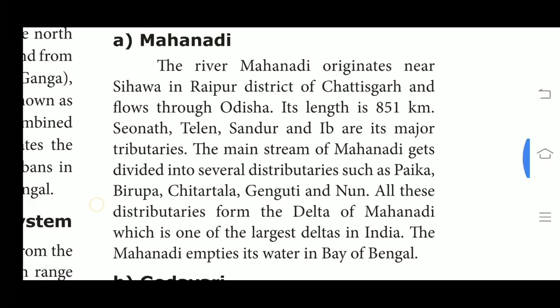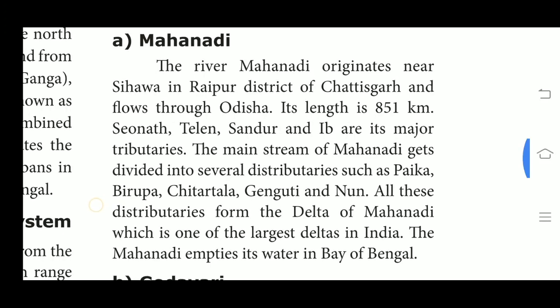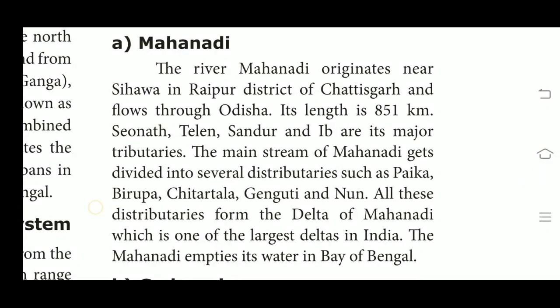Mahanadi is also known for the Hirakud Dam. The river flows through Chhattisgarh and Odisha. At Sambalpur, the Hirakud Dam on the river has formed a man-made lake 35 miles long. The dam has several hydroelectric generators.